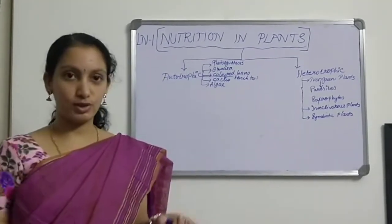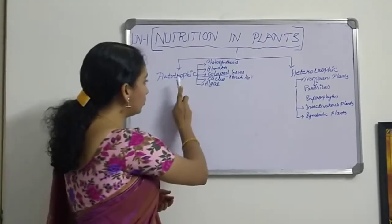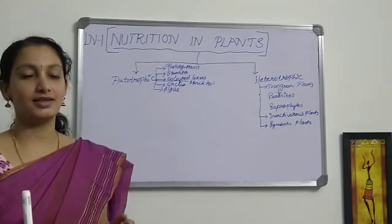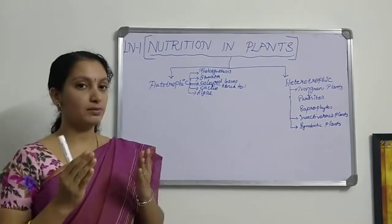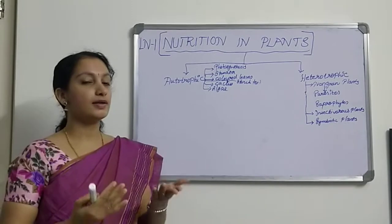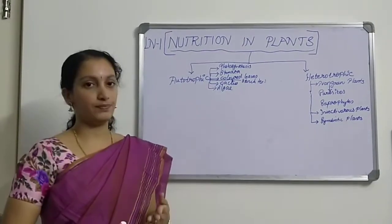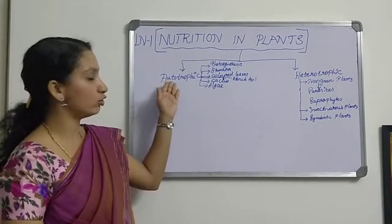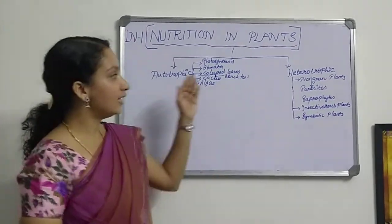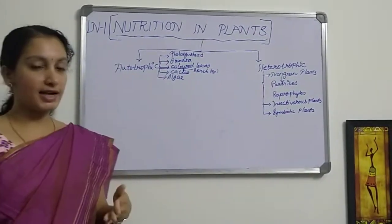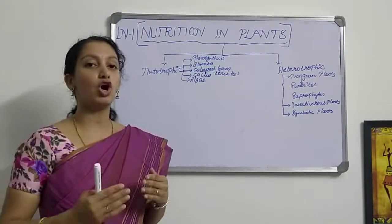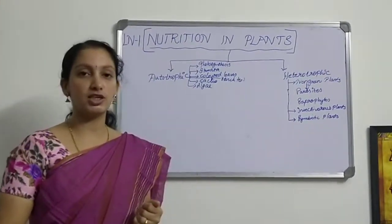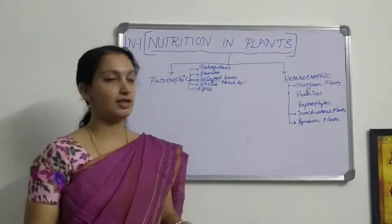There are two modes of Nutrition: Autotrophic mode of Nutrition and Heterotrophic mode of Nutrition. Autotrophic means 'auto', meaning self or by its own — it can produce food. Heterotrophs are organisms which are dependent on Autotrophs, and their mode of Nutrition is called Heterotrophic mode of Nutrition.